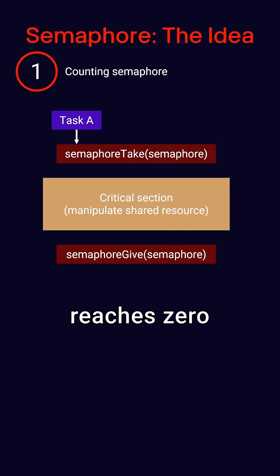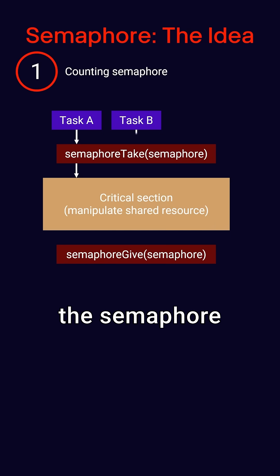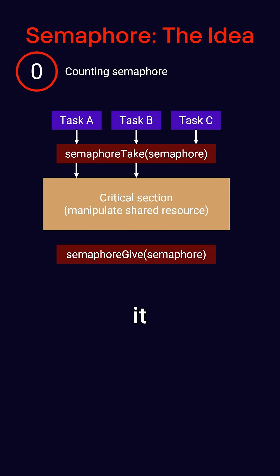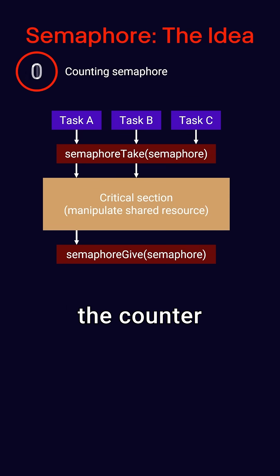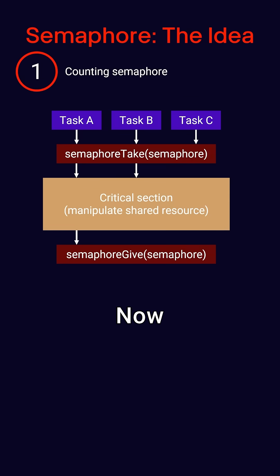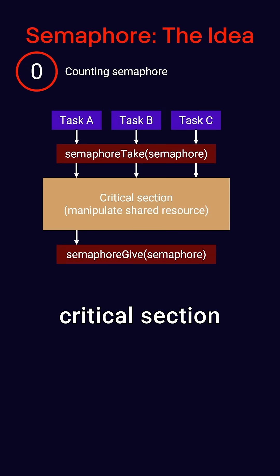When that counter reaches zero and another task tries to access the semaphore, the task is blocked and must wait for another task to finish. When a task finishes, it gives or releases the semaphore, which increments the counter back up to some previously set max value. Now the waiting task can unblock, take the semaphore, and enter the critical section.